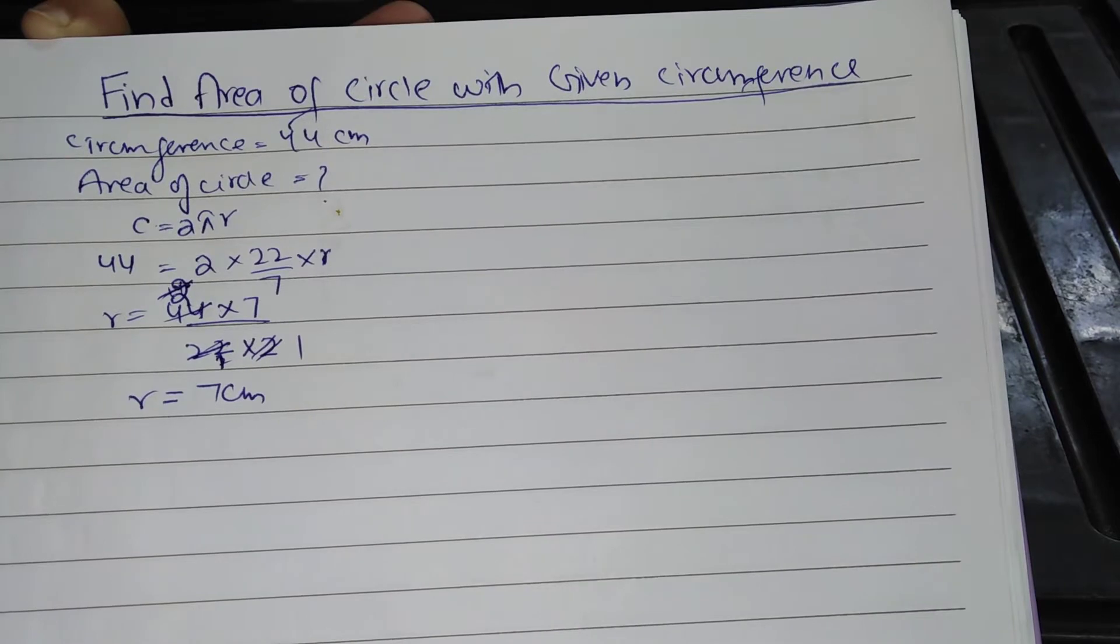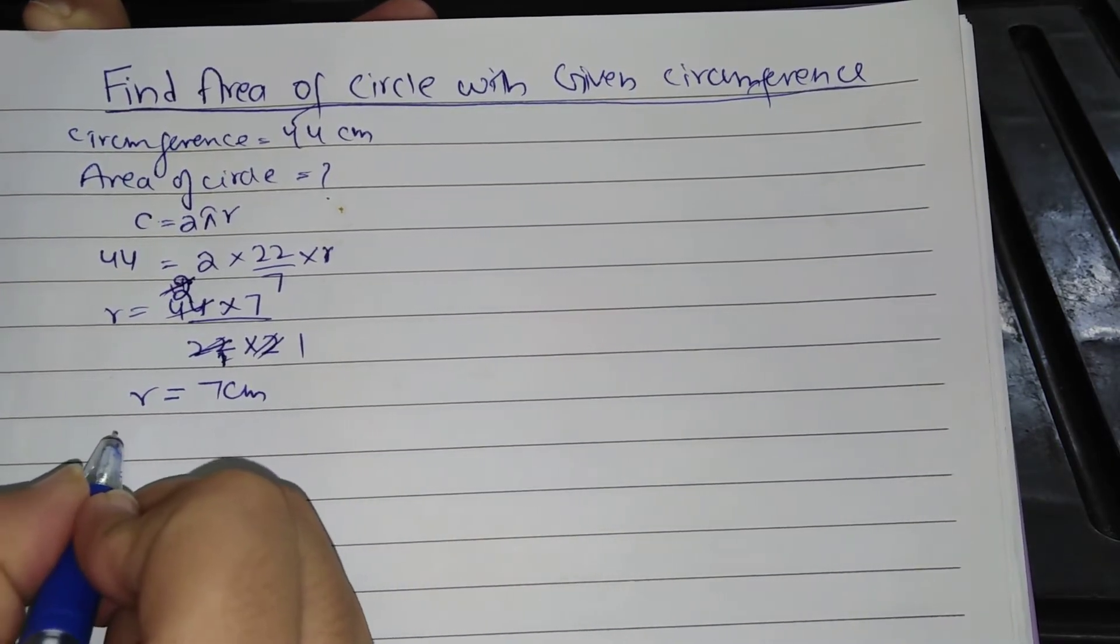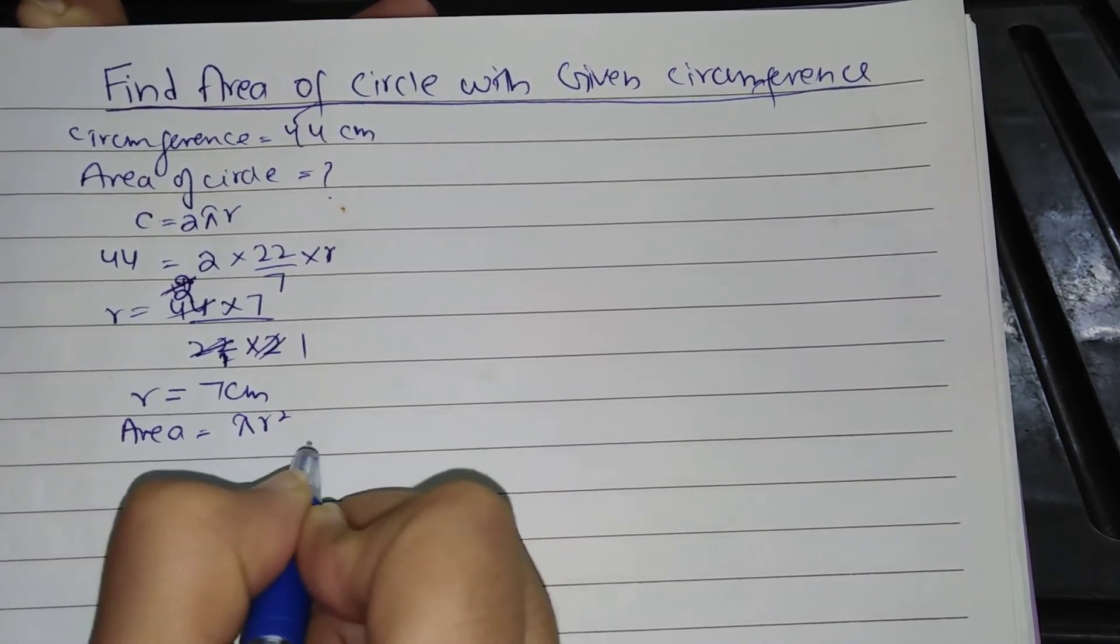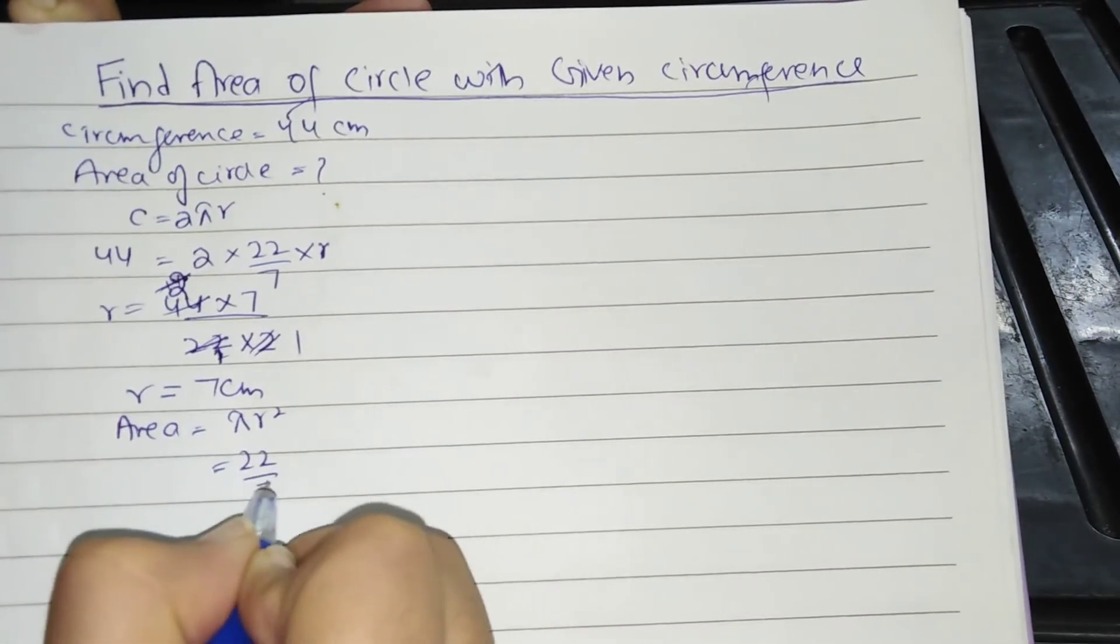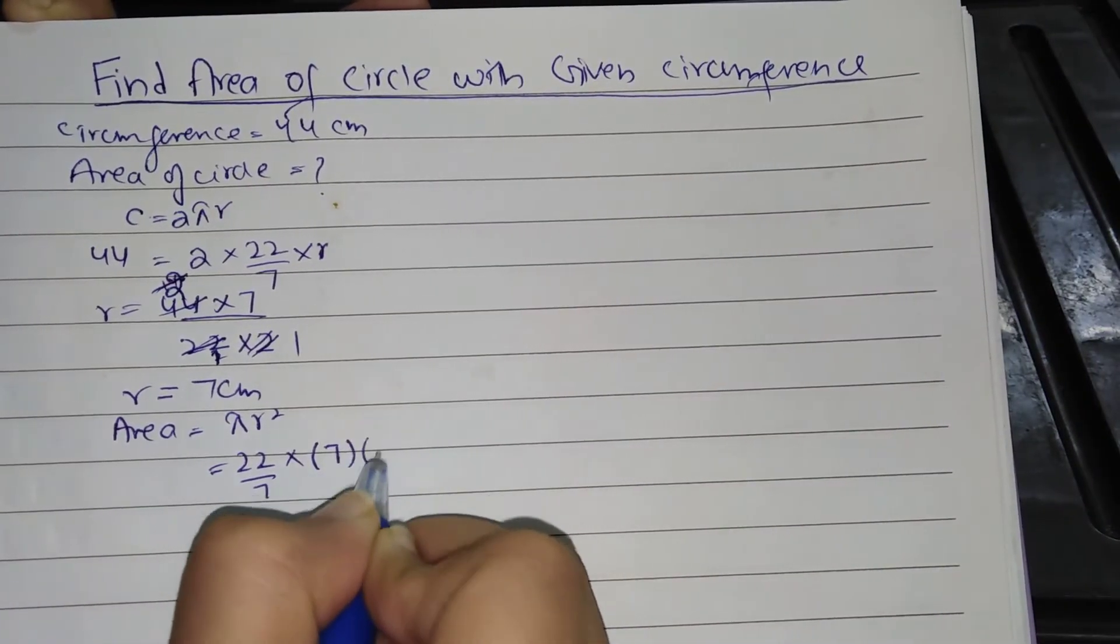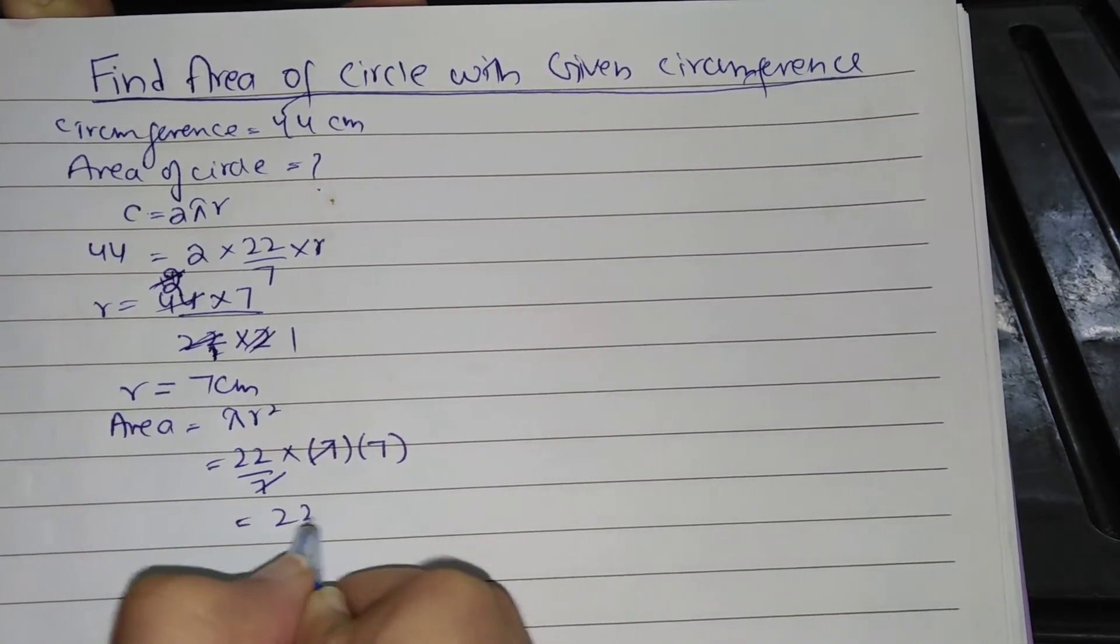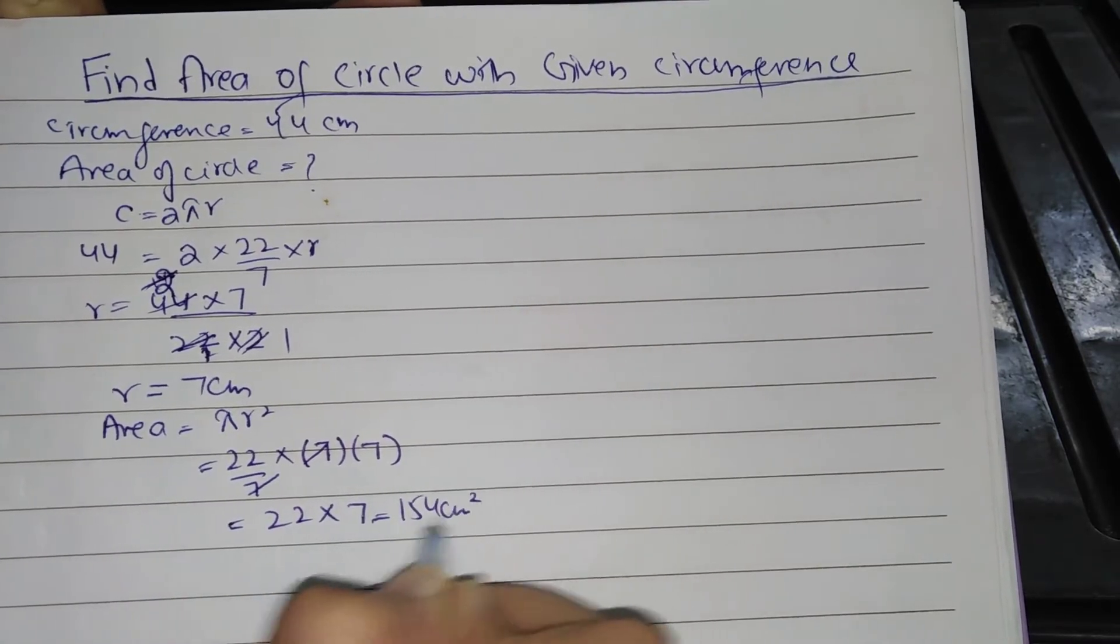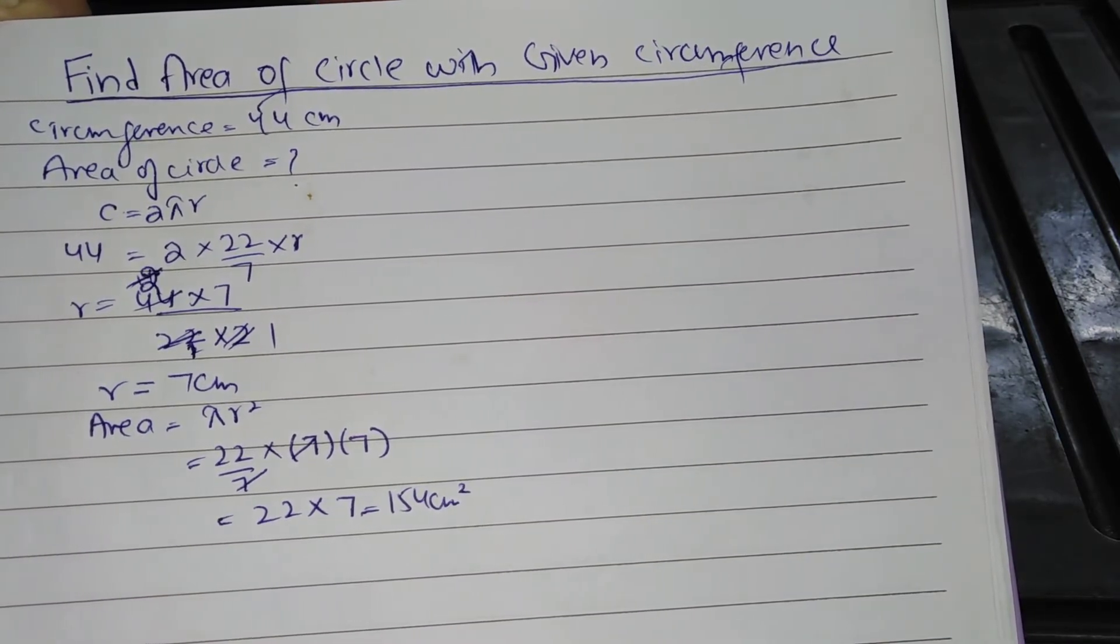So here comes out radius equal to 7 cm. So putting this in the formula, area equal to πr². So this will be equal to 22 by 7 into r is 7, so 7 into 7. 7 and 7 cancel, result is 22 into 7, which is equal to 154 cm². This is the traditional method of finding area if circumference is given for a circle. Now we will discuss the short trick.